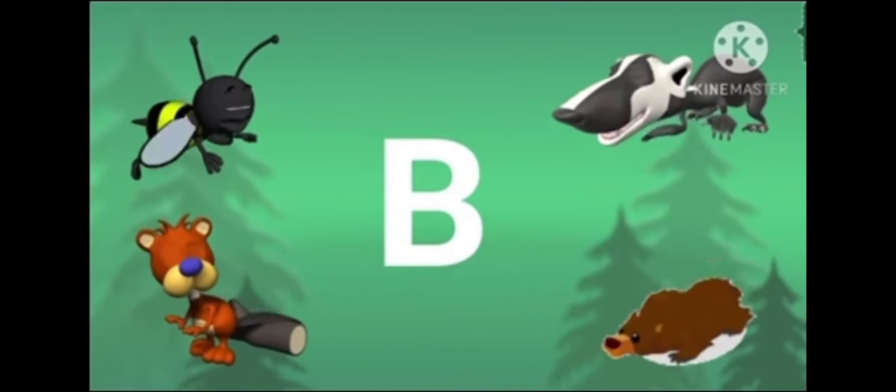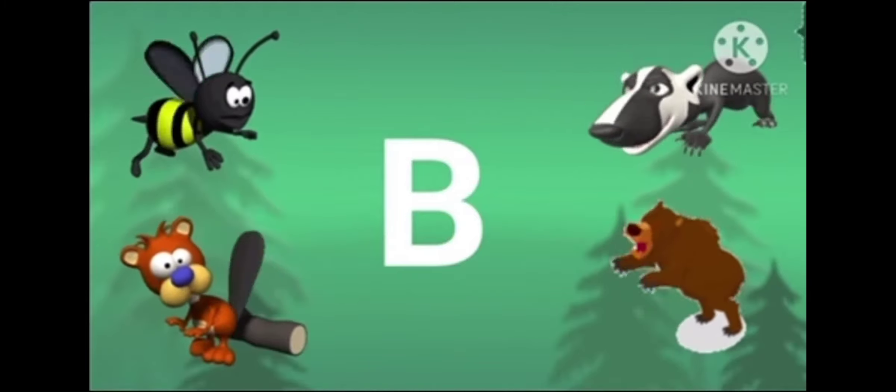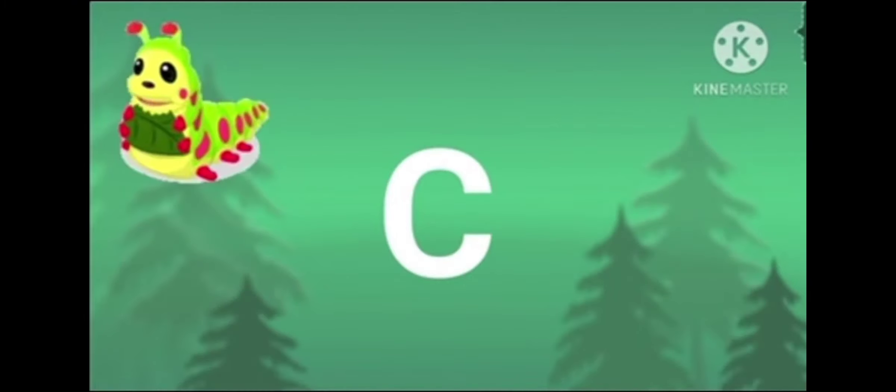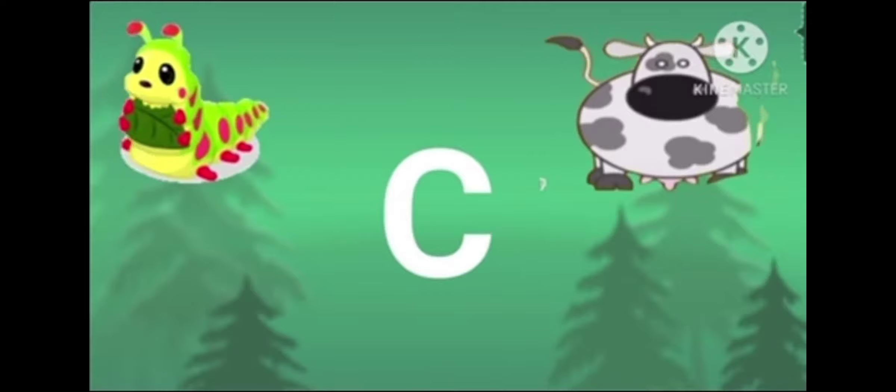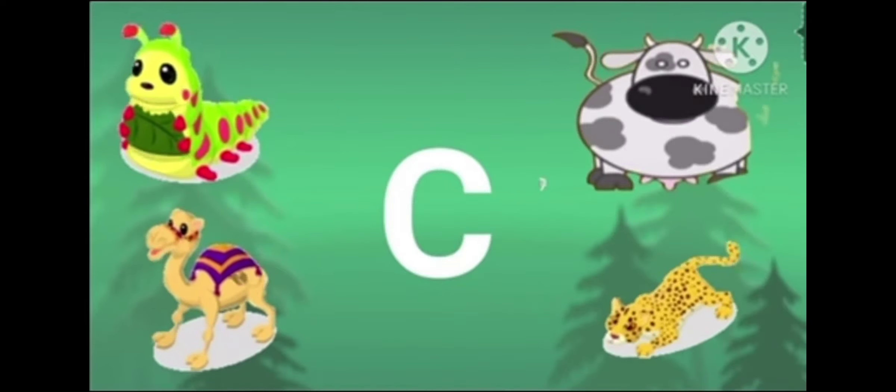B is for bear who eats honey from the bees. C is for caterpillar, cow and camel. C is for cheetah, the fastest runner in the world.